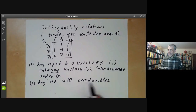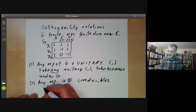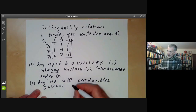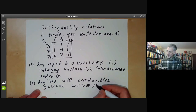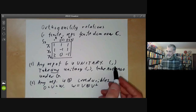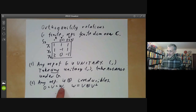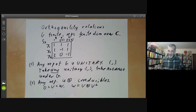A consequence is that any representation is a direct sum of irreducibles. This is true for any unitary representation because given a representation V contained in a representation W, you can write W equal to V plus the orthogonal complement of V under the invariant inner product, and this will be invariant under G. Since all representations are finite dimensional, this shows by induction on the dimension that they are all sums of irreducibles.